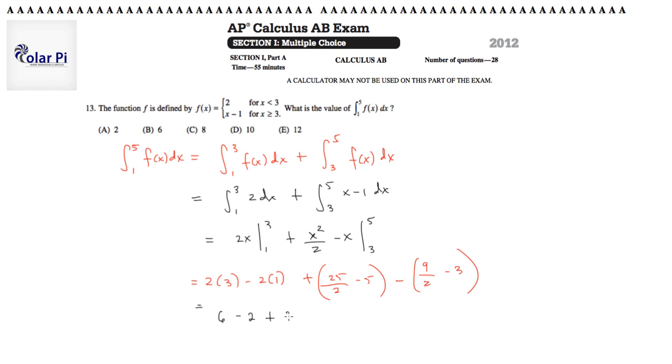This is 6 minus 2, which is 4, plus 25 halves minus 9 halves, and then minus 5 plus 3. So this is 4 plus 16 halves which is 8, and then the rest of that is negative 2. I actually had to redo this video because I said that was positive 2 and wrote 14 at the end instead of the correct answer, which is 4 plus 6 which is 10.